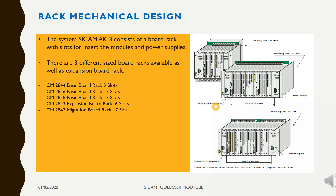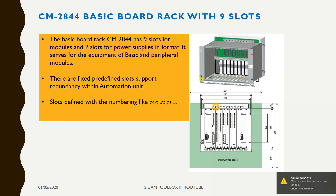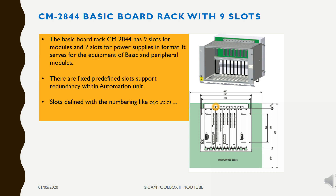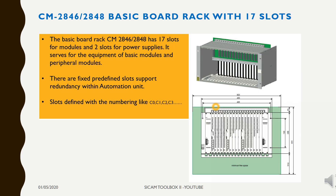Racks serve for the equipment of basic modules and peripheral modules. Slots are predefined for redundant basic modules. Expansion Board Racks are used for expansion of inputs and outputs within the automation system. The Basic Board Rack CM2844 has 9 slots for modules and 2 slots for power supplies. It serves for the equipment of basic and peripheral modules, with fixed predefined slots supporting redundancy within the automation unit.